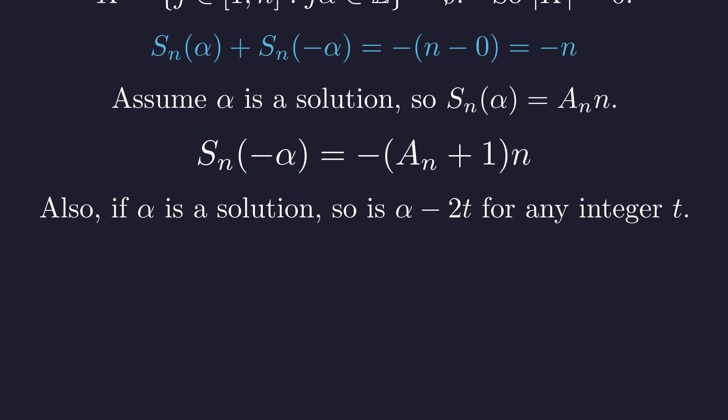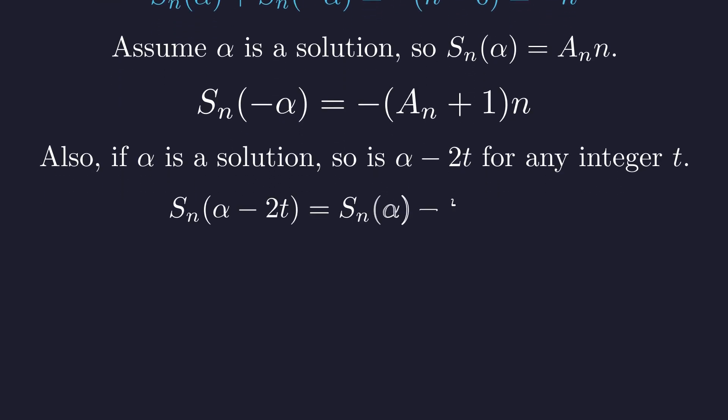Furthermore, notice that if we subtract an even integer, say 2t, from alpha, the new sum is related to the old sum in a simple way. The sum for alpha minus 2t is equal to the original sum for alpha minus t times n times n plus 1. Since both the original sum and the subtracted term are divisible by n, the new sum must be as well. This means we can add or subtract any even integer from a solution and it remains a solution.